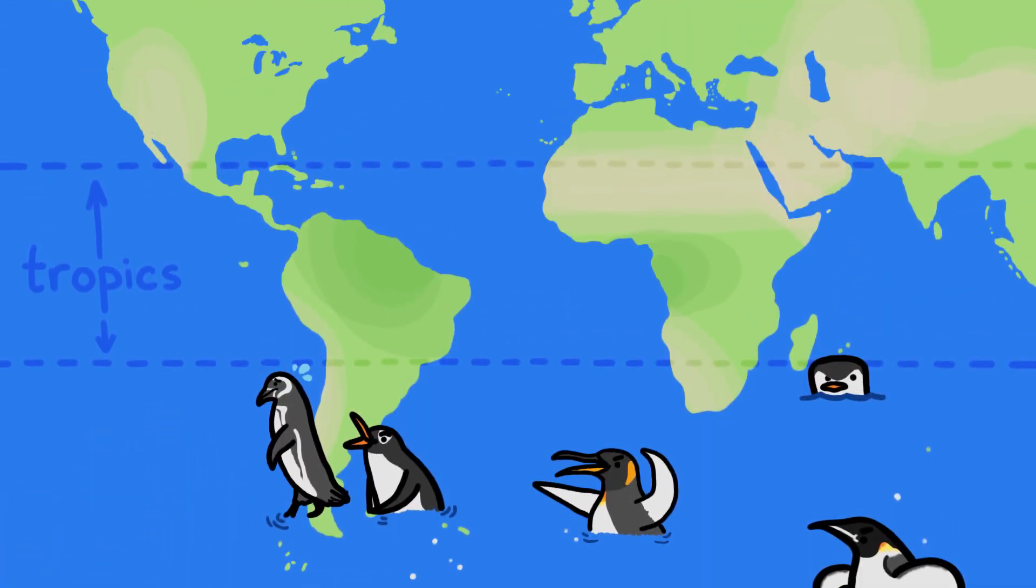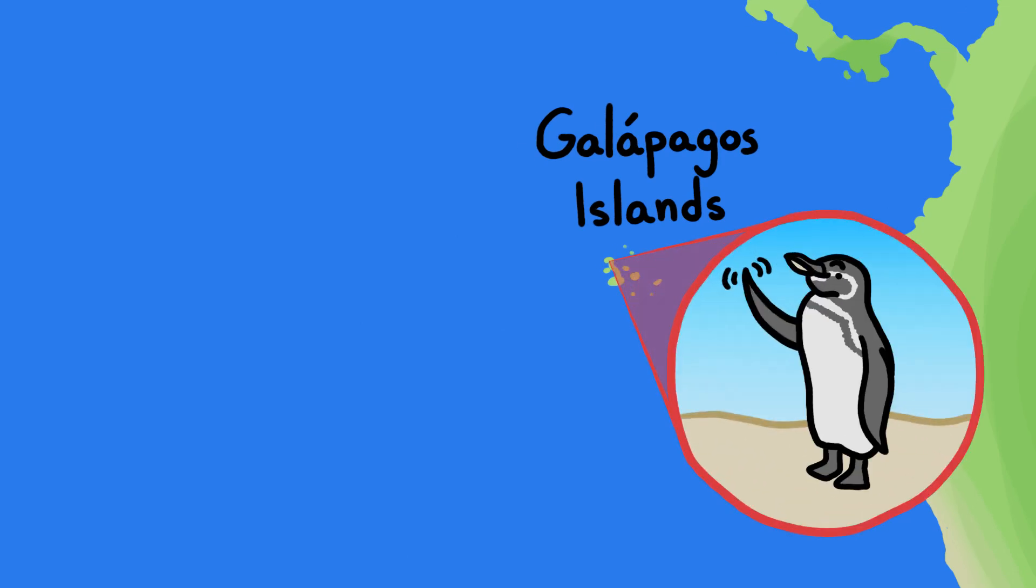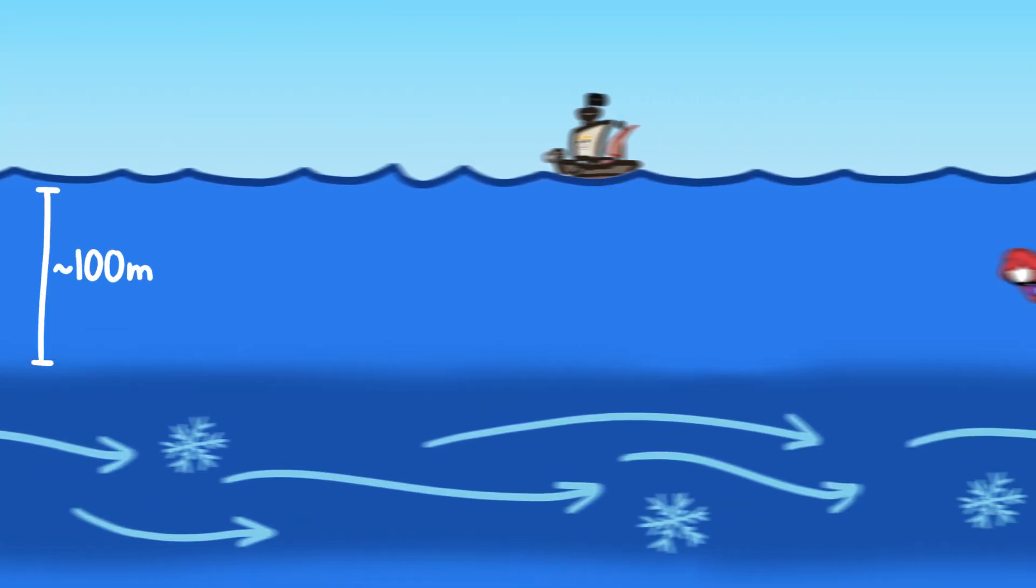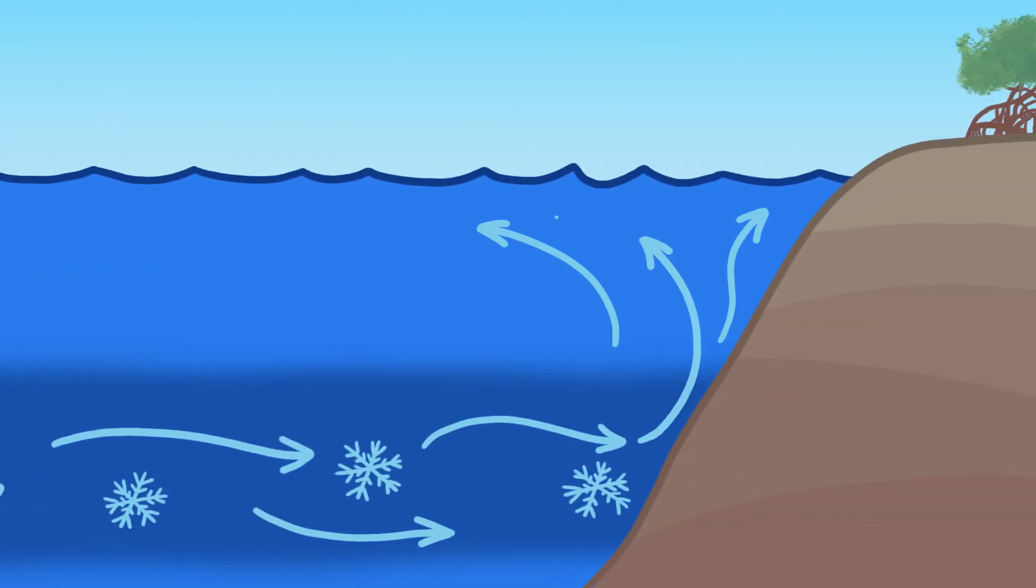But over 4,000 miles north in the tropical Galapagos Islands, you can also find penguins because of something called the Cromwell Current. This cold water current flows from west to east at about 100 meters below the ocean's surface, until it collides with the underwater part of the Galapagos Islands and turns upward toward the surface.